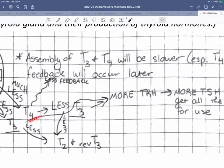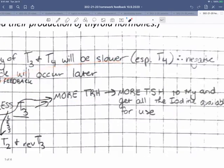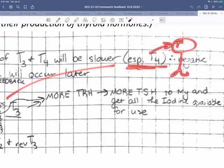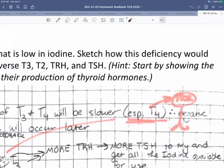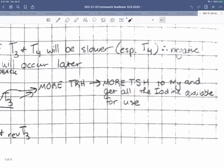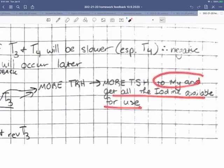The consequence of that is that there is going to be more TRH. Why? Because with less T4 we have less feedback of T4 on TRH neurons. So with less feedback we have more TRH, that gives us more TSH.